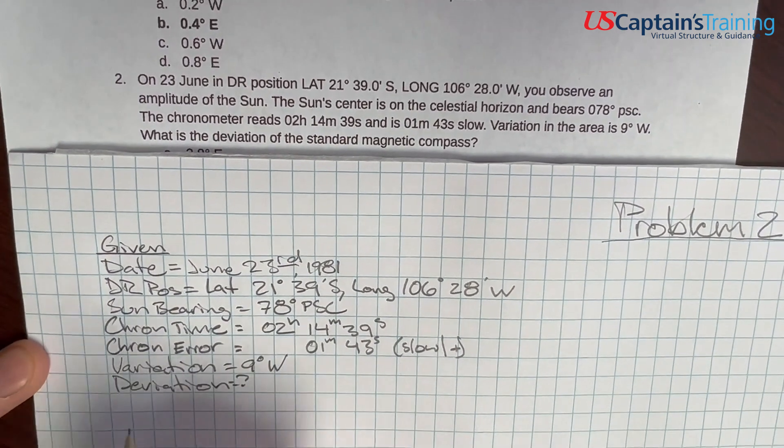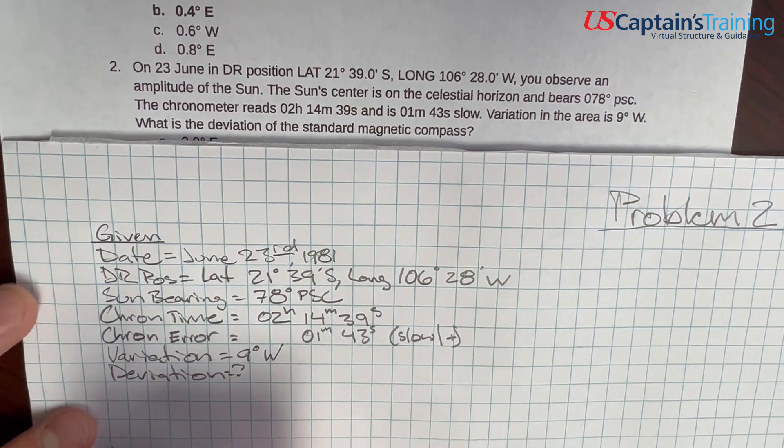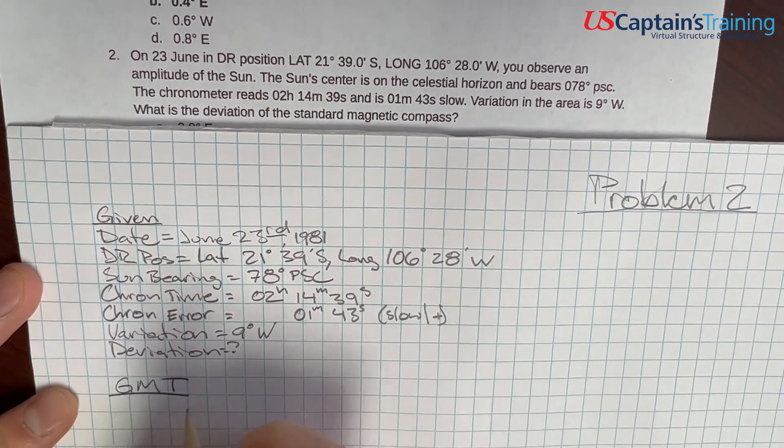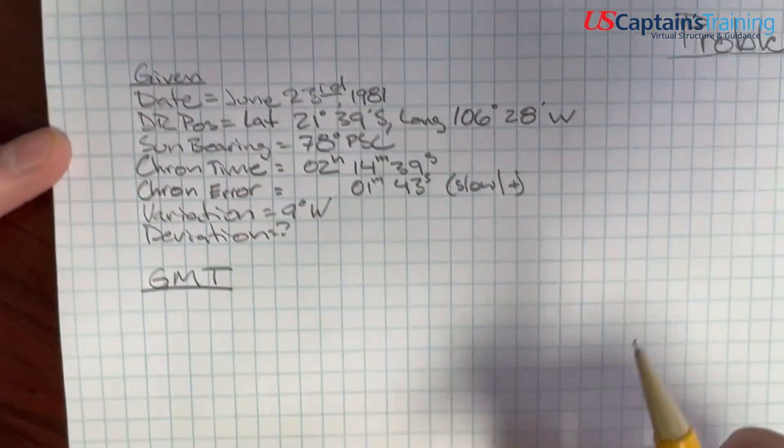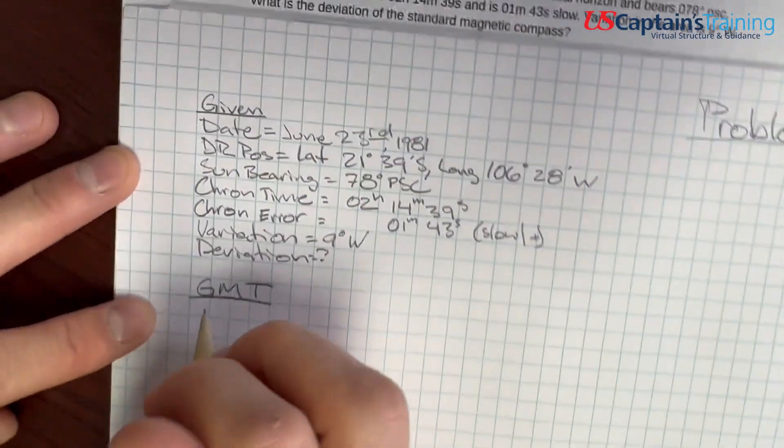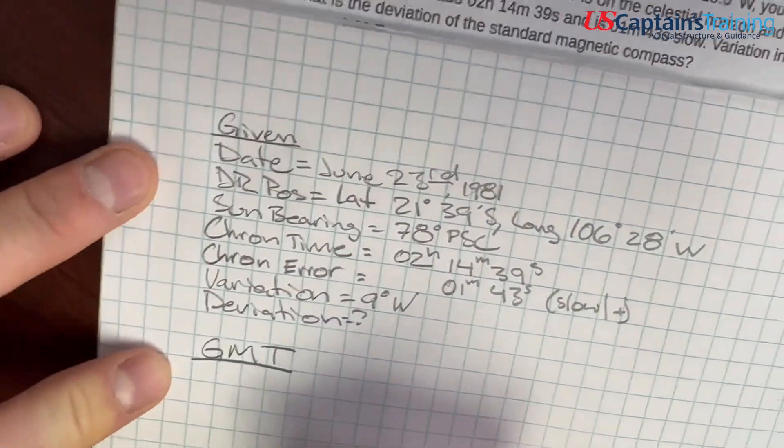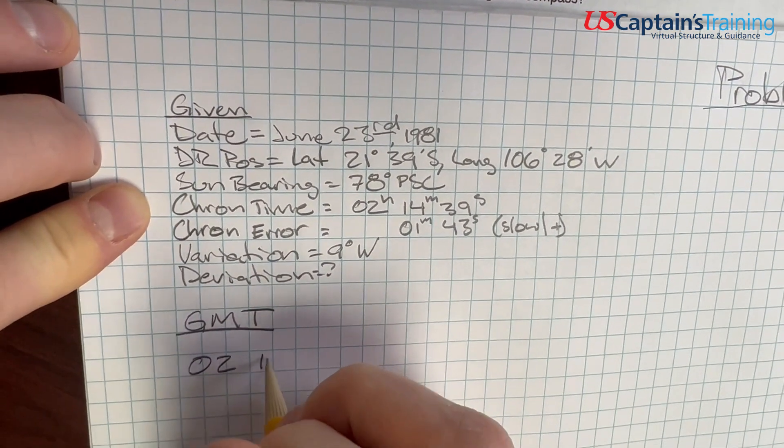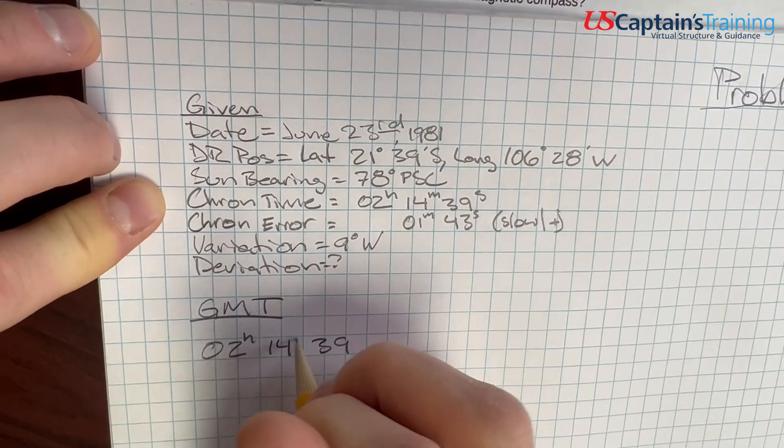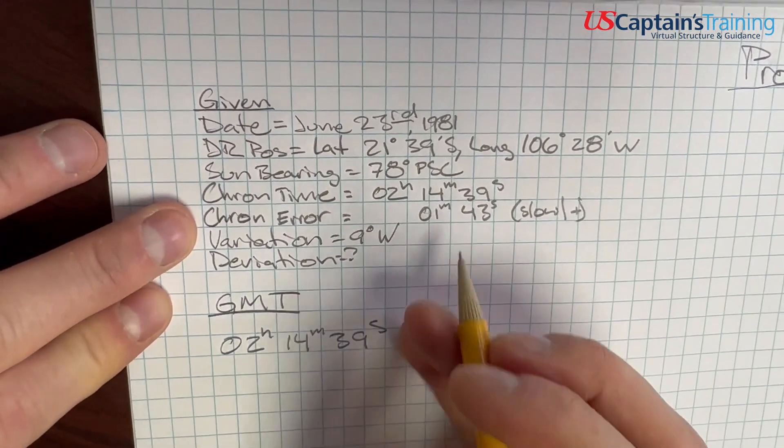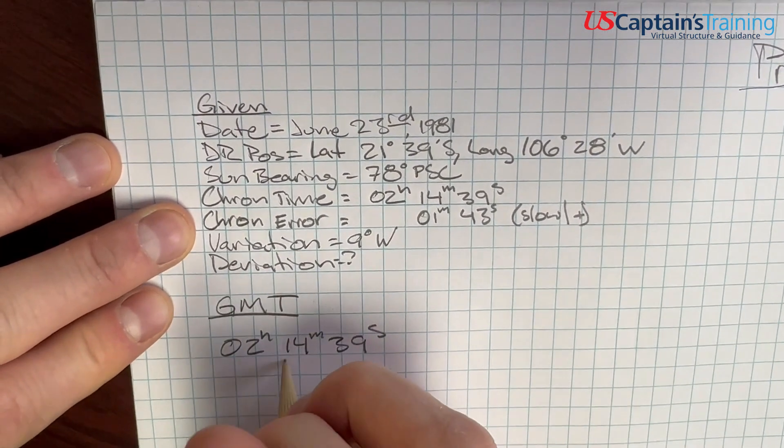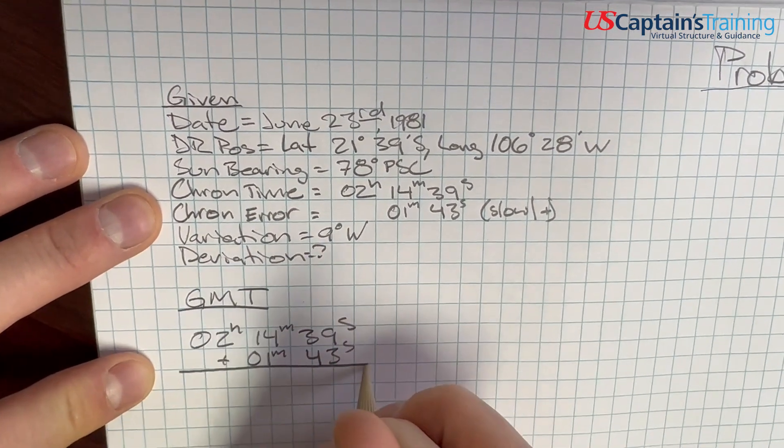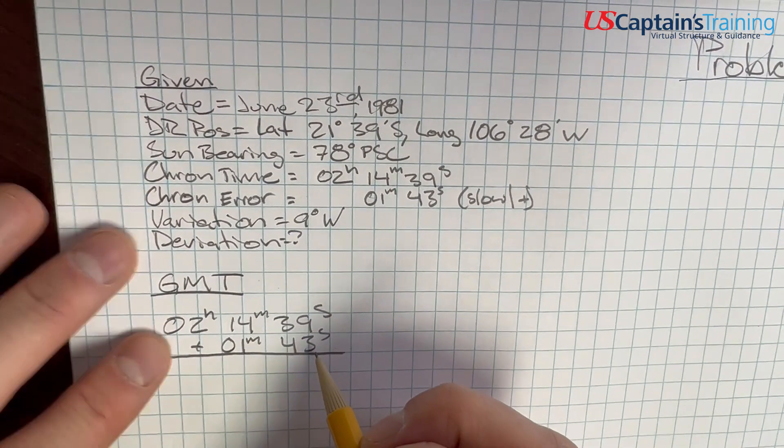The first thing we do is get the GMT so we can jump in the almanac and get the declination because we'll need that. For me, this is the most confusing part. You have to figure out what day you're in and what GMT to use. The chronometer time is 02h 14m 39s. We'll put the error on there, 1 minute 43 seconds slow, so we add it.